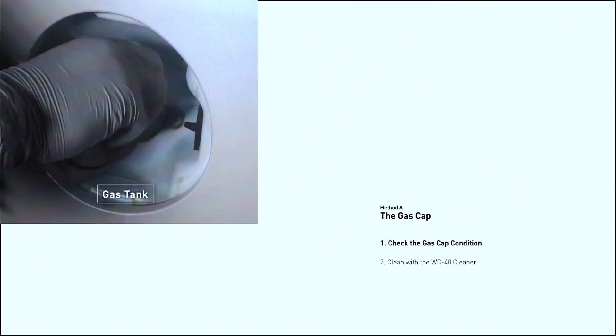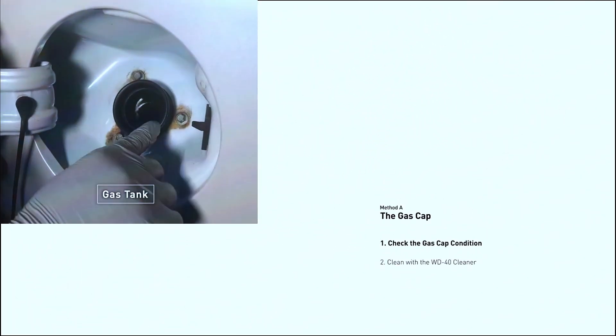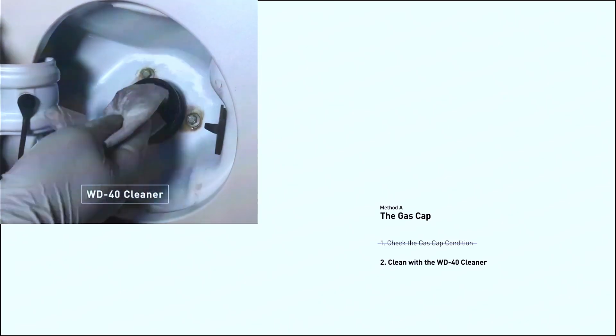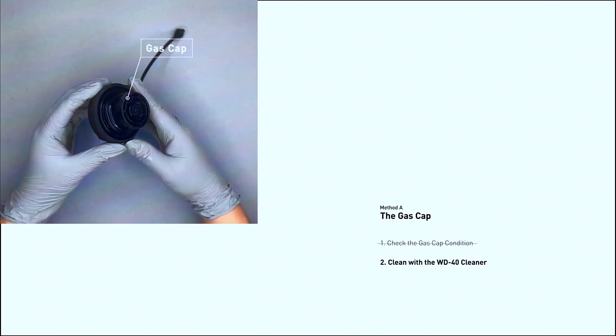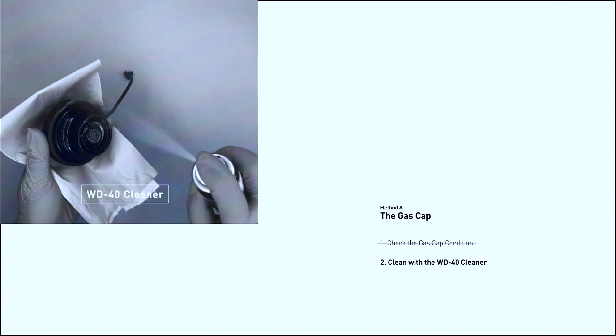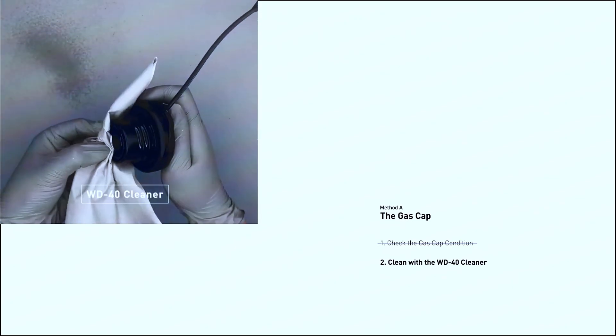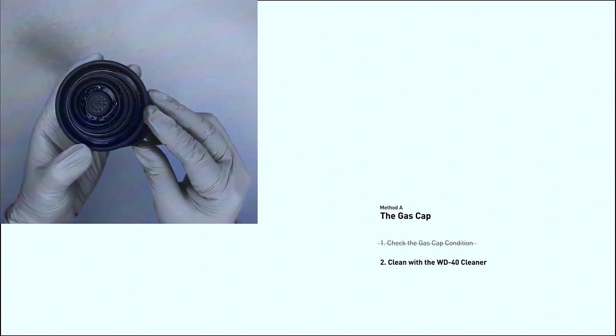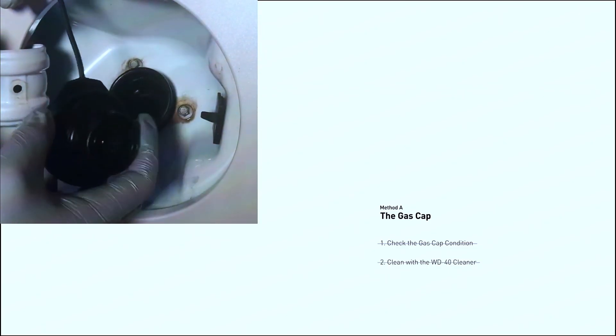Check the gas cap: believe it or not, a loose or faulty gas cap is a common culprit for P0453. Start by giving your gas cap a good visual inspection. Look for cracks, tears, or any obvious damage to the seal. Clean and tighten: take a rag and wipe down the gas cap seal. Make sure there's no debris or grime preventing a proper seal. Tighten the gas cap firmly, but don't overdo it.